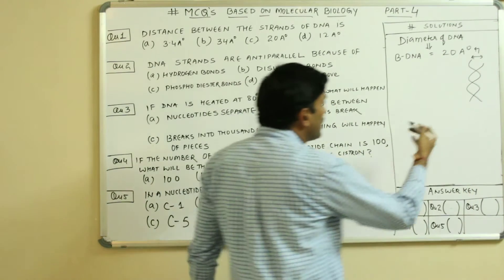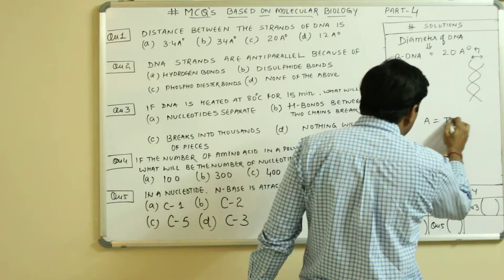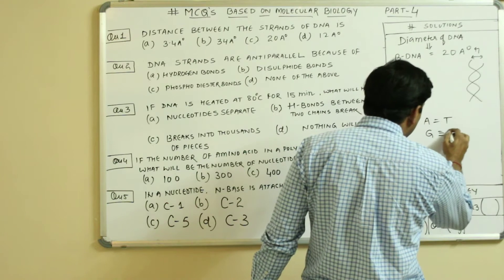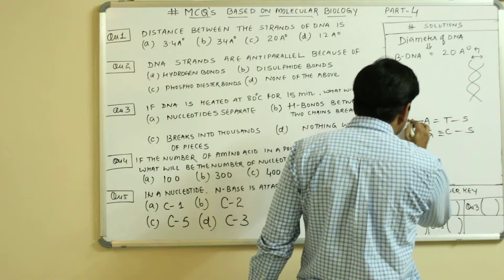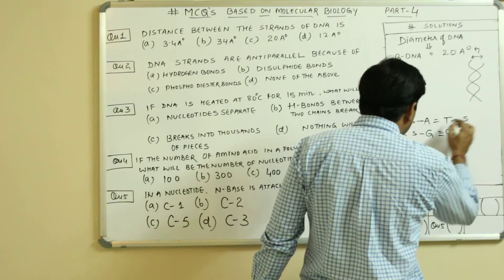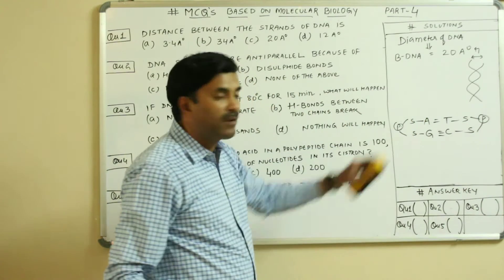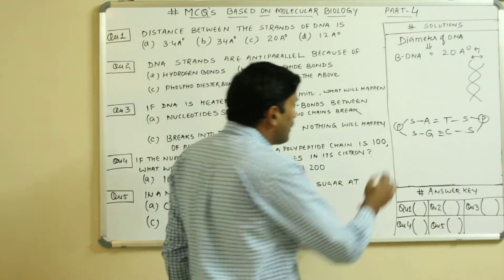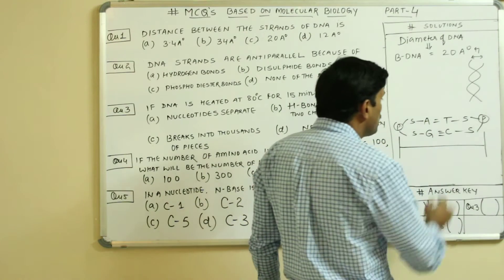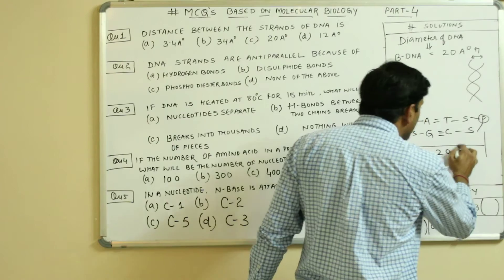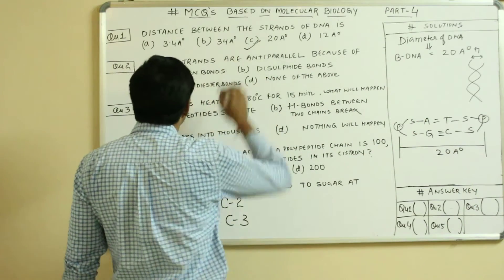We can also show the diameter of DNA with a diagram: A double bond T, G triple bond C, with sugar and phosphate on each strand. The diameter of the DNA means the distance between the two phosphate groups, and that distance is 20 Angstroms.